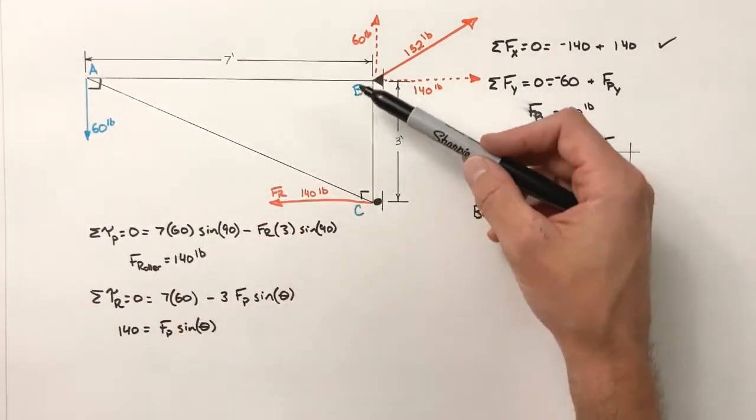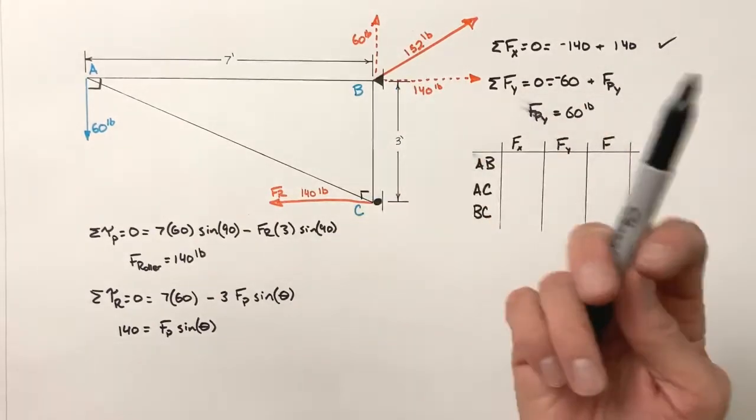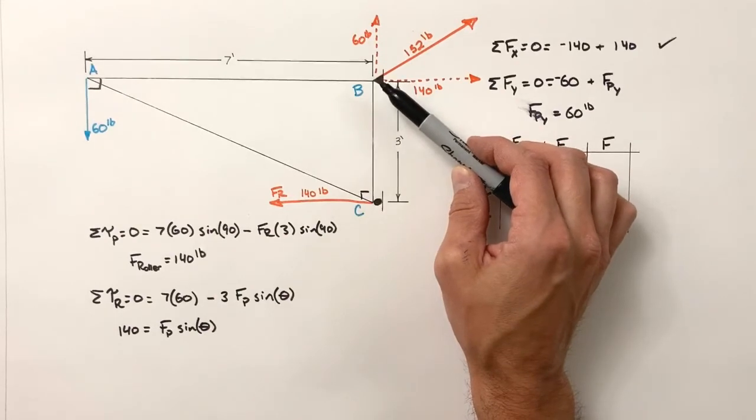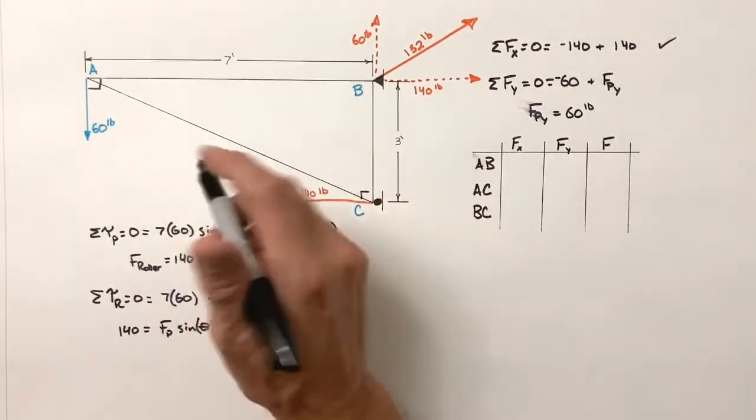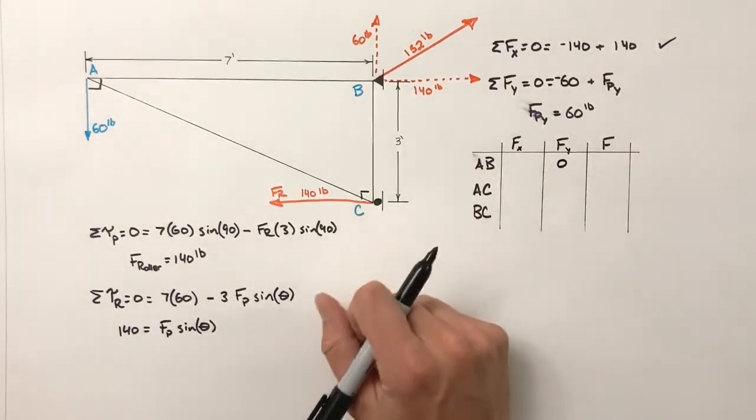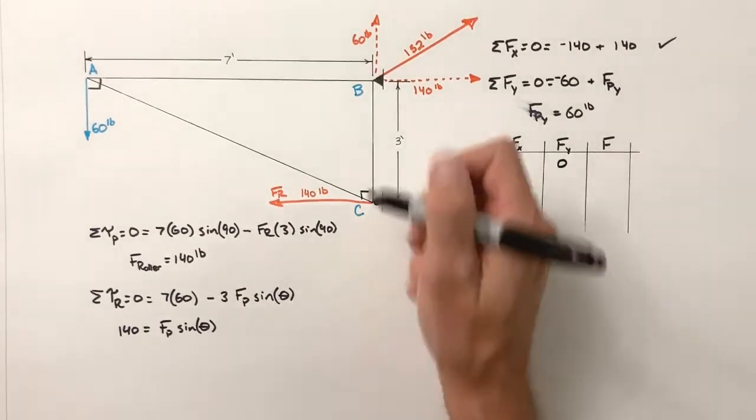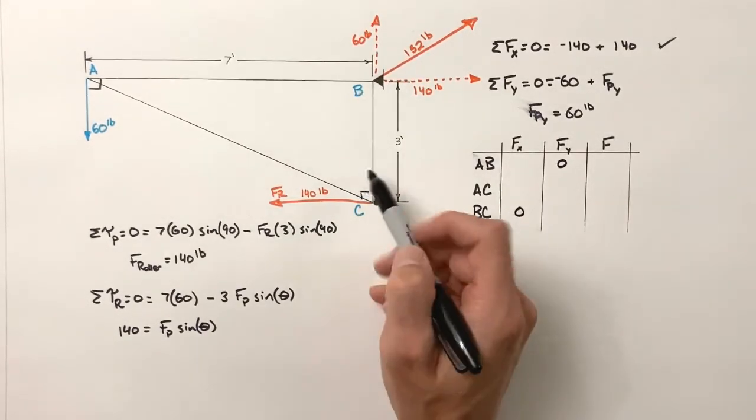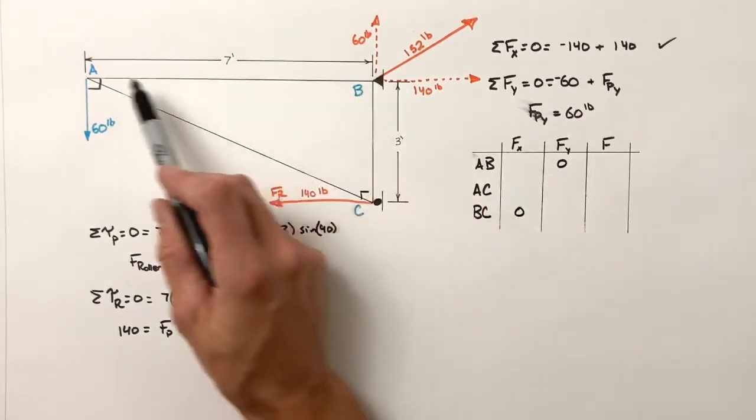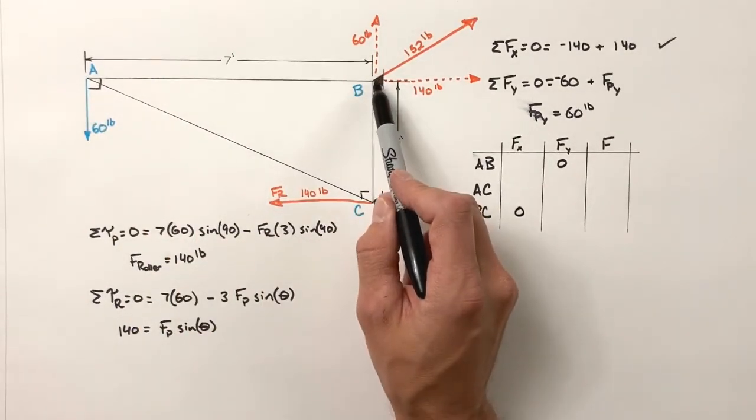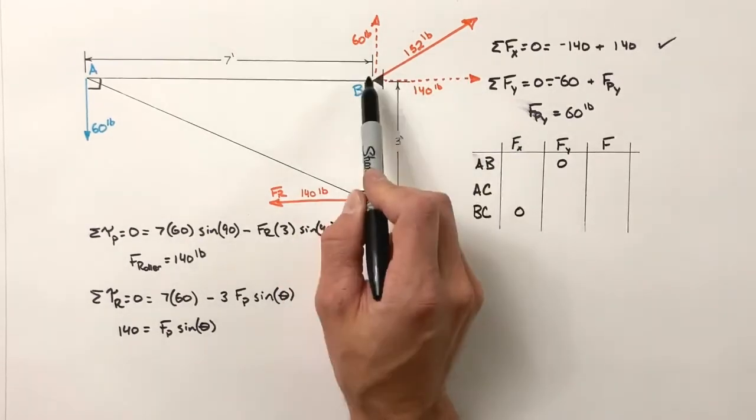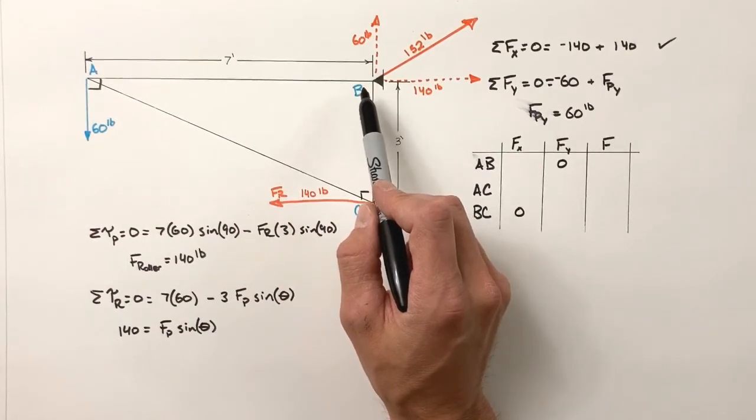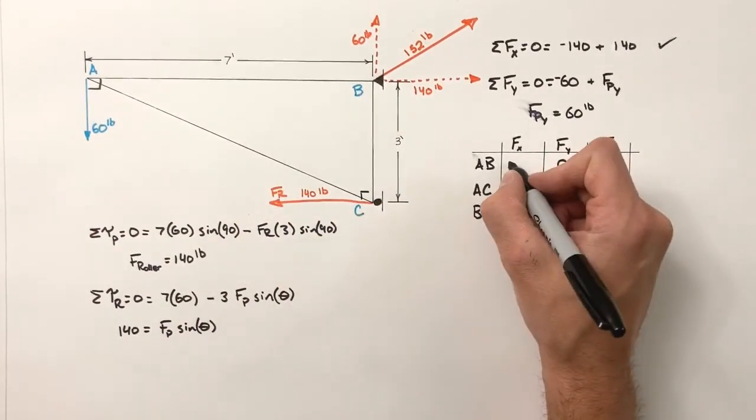Let's look at our different members here. As always, we can start either with the load or with either of the supports. And in this case, because we've actually already worked out the forces at the pin here, so much of our work is already done. We know AB is a horizontal member. That means it can carry no load in the y-axis. And we know BC is a vertical member. That means it can carry no load in the horizontal axis. And that makes our life nice and easy for this truss right here, because we know the pin is pulling with 140 pounds to the right.